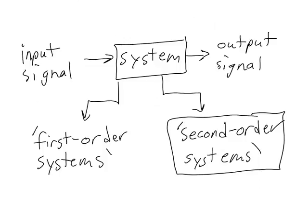We're going to follow the same progression as we did last time. First, we're going to take a look at some examples of second order systems. Then I'm going to show you what the step and ramp responses especially look like.